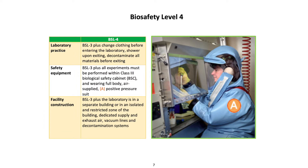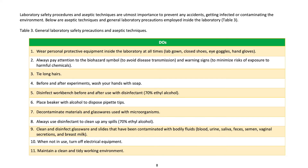BSL 4 laboratory practice: BSL 3 plus change clothing before entering the laboratory and shower upon exiting; decontaminate all materials before exiting. Safety equipment: BSL 3 plus all experiments must be performed within a class three biological safety cabinet while wearing a full-body air-supplied positive pressure suit. Facility construction: BSL 3 plus the laboratory is in a separate building or in an isolated and restricted zone; dedicated supply and exhaust air, vacuum lines, and decontamination systems.